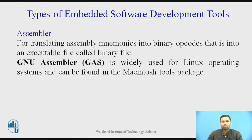The next type of tool is Assembler. An assembler translates assembly mnemonics into binary opcode — that is, into an executable binary file. The GNU assembler (GAS) is widely used for Linux operating systems and can be found in the Macintosh tool package.